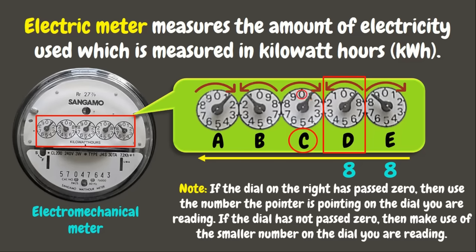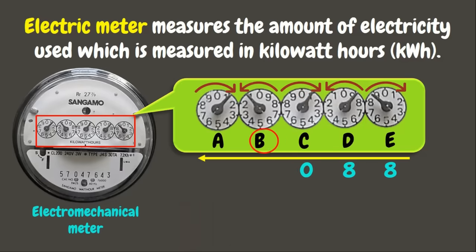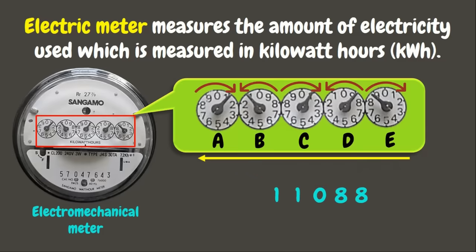Next, let's go to dial B. The pointer is between 2 and 1, so we'll record the smaller number which is 1. And lastly, we have dial A where the pointer points again between 1 and 2 — we will get the smaller number, which is 1 as well. Therefore, the reading of this meter is 11,088 kilowatt hours.